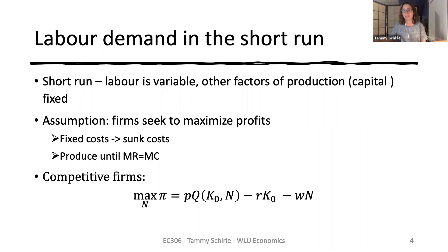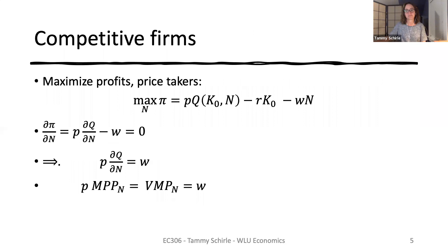Here we're going to look at a competitive firm interested in maximising its profits. They can produce output Q using only capital K and labour N as inputs. For each unit of output, they can charge a price P in the market. They have to pay for the inputs they use, paying rent on any capital and wages for any labour. Their capital is a fixed cost and thus a sunk cost here, so it doesn't enter the problem so directly for a profit maximising firm. Instead, they focus on how much labour to use in their production process.